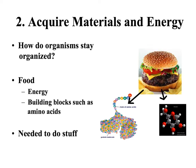The second characteristic of life is that living things must acquire materials and energy. How do organisms stay organized? They need energy. To get energy, we eat food. Living things break down their food into energy such as ATP and building blocks like amino acids, carbohydrates, and sugars that we can use to build other materials that we need.